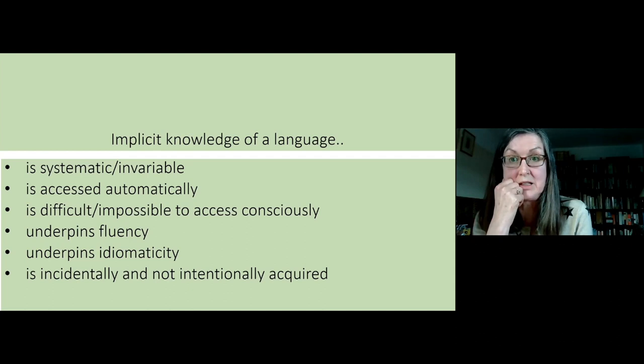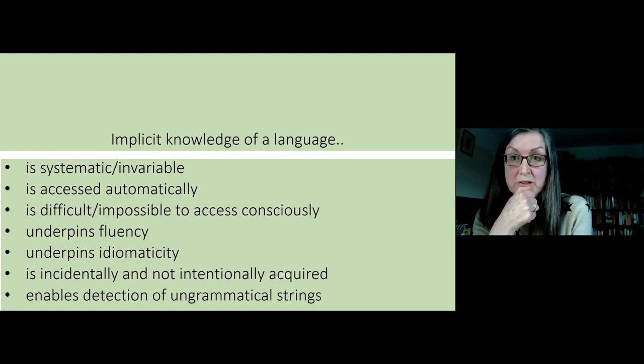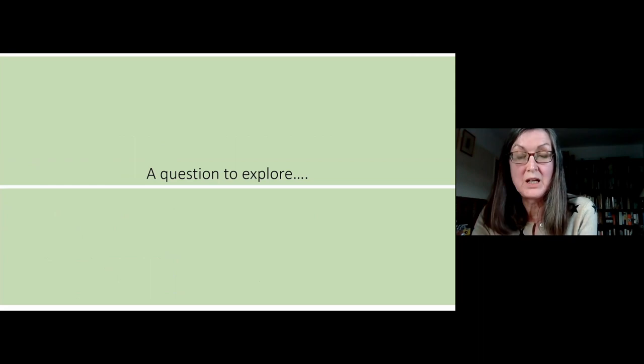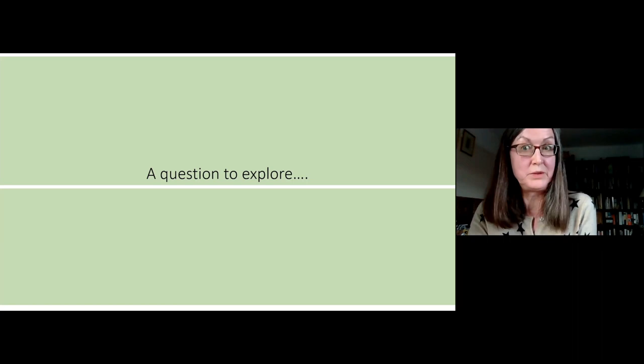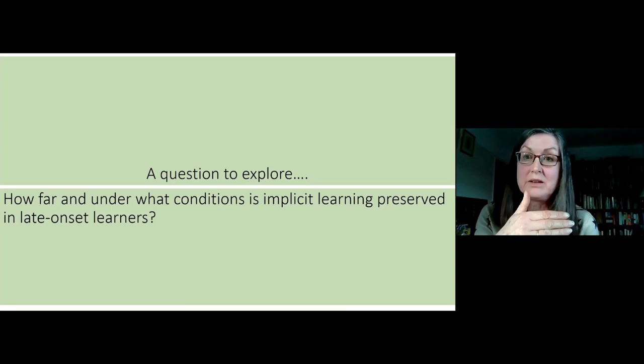This is why we can use implicit knowledge as a research tool: it enables detection of ungrammatical strings and detection of things which aren't idiomatic. So the question I have been exploring for many years with Silcher is: how far, and under what conditions, is implicit learning preserved in late onset learners? We've made the case that it's the only way early learners can learn what they learn about language, but how far can that be preserved in late onset learners? Is there anything left of it, or has it been replaced by explicit learning?